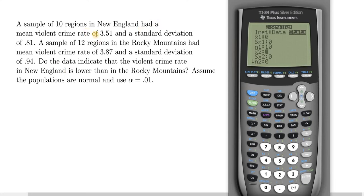Had a mean violent crime rate of 3.51 - that's the sample mean, our first X bar. So let's go up here to X bar and enter 3.51 and press ENTER. And a standard deviation of 0.81. That's the sample standard deviation. Notice the words sample and standard deviation are in the same sentence.